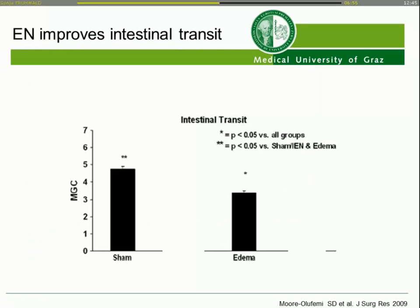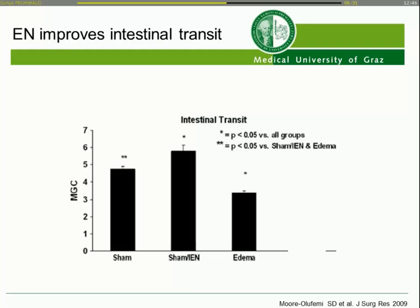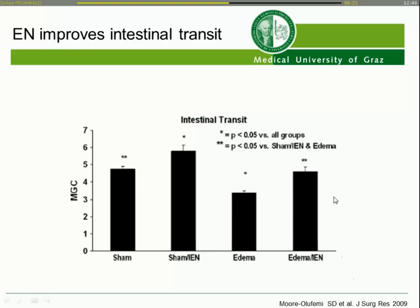Enteral nutrition also improves intestinal transit. In a rat study, a sham-operated group was compared to a group where ligation of the superior mesenteric vein was performed, producing hyperemia and edema of the small bowel. Feeding both groups resulted in an increase of intestinal transit in the sham group, and also a significant increase in the group with gut edema.